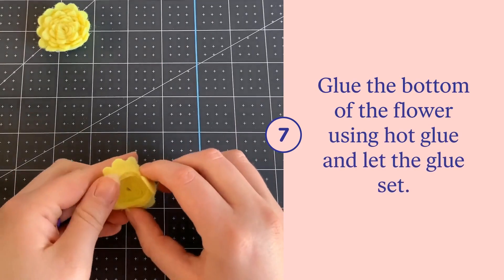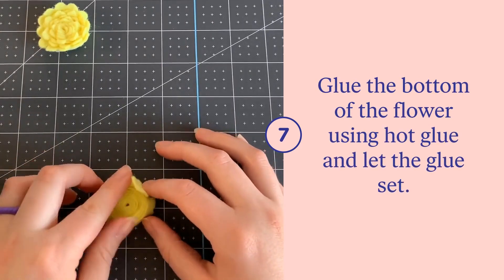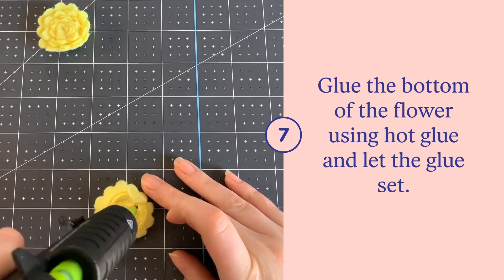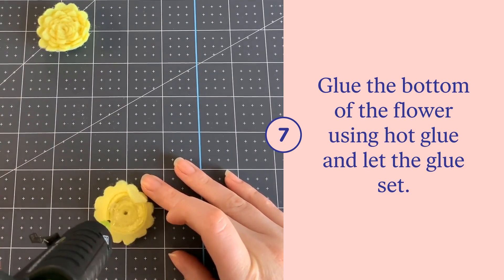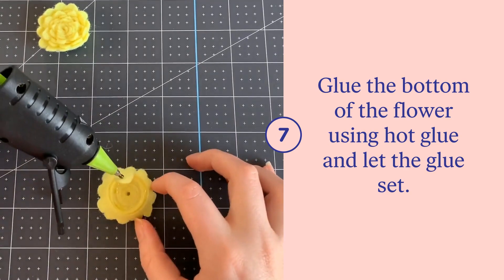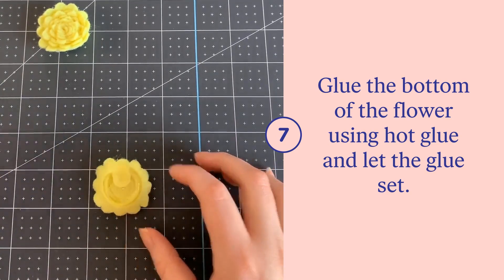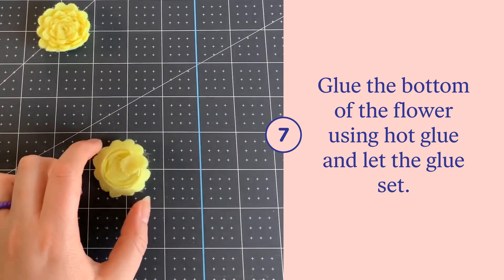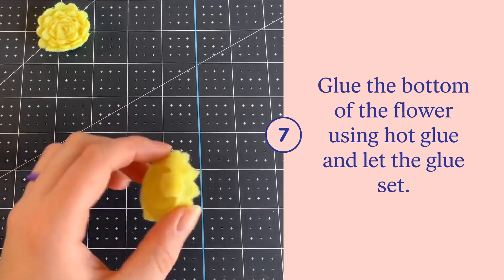After you're finished rolling, set the bottom side up on the table and get all the layers even. Then cover most of the bottom of the flower with hot glue. Then you can push that little bottom piece down in the hot glue while it's still hot using your glue gun. Then you just want to let the glue set and the heat leave before you touch the bottom again. Be careful, it's very hot.